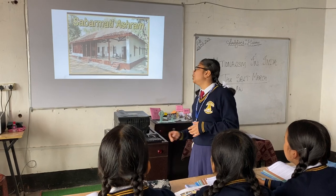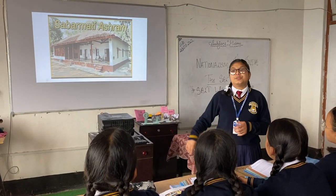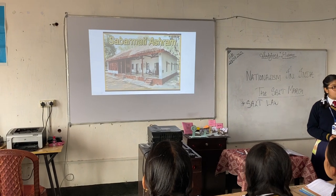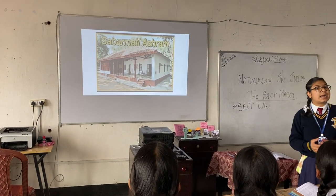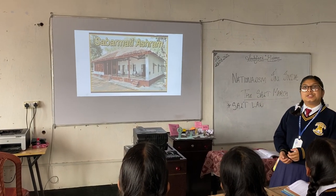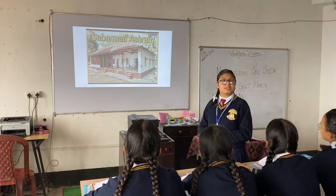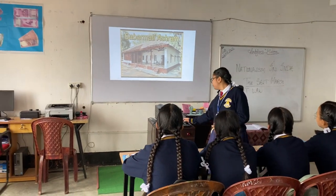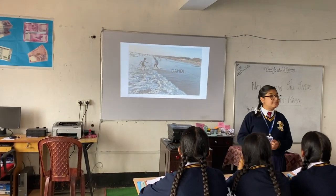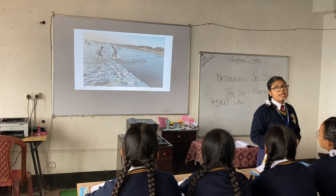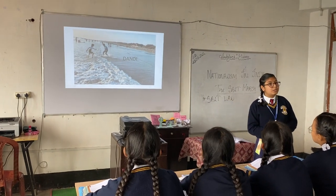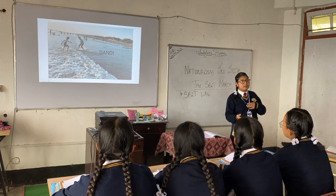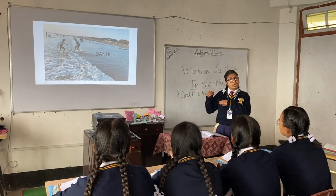He set out his journey for almost 240 miles from Sabarmati Ashram to Dandi. The Sabarmati Ashram, also known as Gandhiji's Ashram, is located on the banks of the river Sabarmati in Gujarat. Dandi is a coastal town in Gujarat itself. So the whole process of the salt march took place in Gujarat.